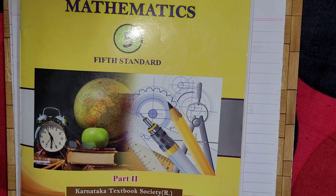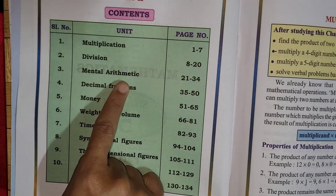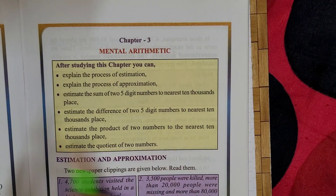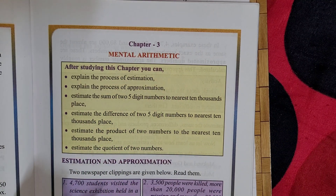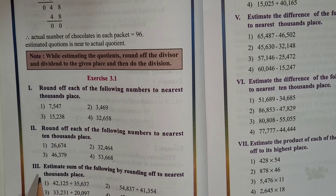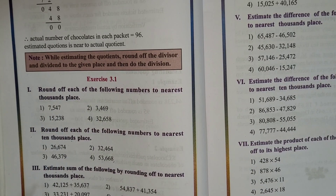Hi my lovely students, how are you all? I hope you all are doing well. Today in this class we are going to continue our same lesson of maths from your textbook part 2, that is mental arithmetic. Open page number 21 — chapter number 3, mental arithmetic. Children, we have already started this lesson and solved the first, second, and third main from exercise 3.1. You will get all those video links in the description box.